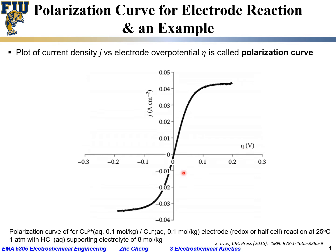This is the polarization curve, and specifically in this case we are showing it for the Cu²⁺ aqua and Cu⁺ aqua electrode reaction, or half-cell reaction, at room temperature — 25 degrees C, one atmosphere, in HCl as the supporting electrolyte. The active species are both at 0.1 mole per kilogram of solvent, i.e., 0.1 molal.